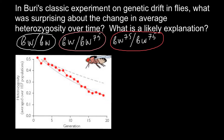As predicted, heterozygosity was lost — but the rate of loss of heterozygosity was greater than predicted. Why does this happen? Let me use different colors to represent each genotype. For example, this genotype is BW/BW — say we have five such flies.